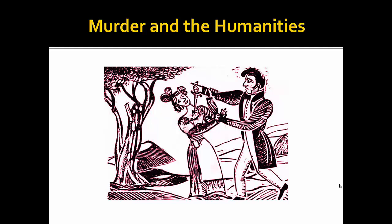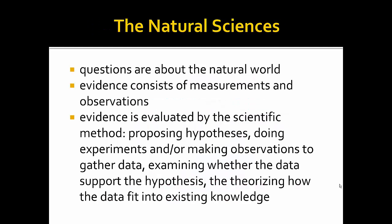Next up, the natural sciences, also often described as physical sciences — disciplinary fields that focus on observable phenomena. Researchers ask questions about the natural or physical universe. Evidence is collected through experimentation, leading to observed, usually measured results. The process of building knowledge in this realm is called the scientific method, comprising the development and testing of a hypothesis, which is a prediction, by designing and running an experiment, collecting data, examining whether the hypothesis is proven, and theorizing how the data fit into existing knowledge.